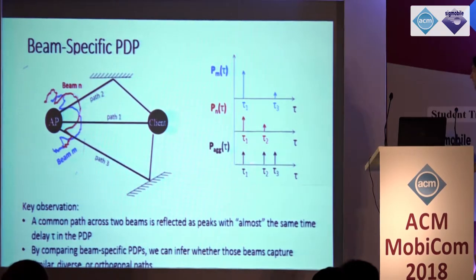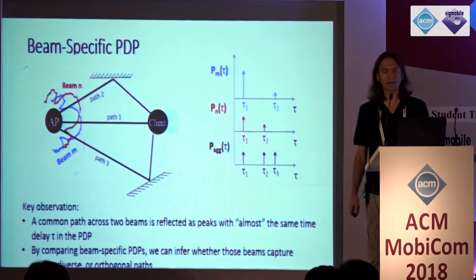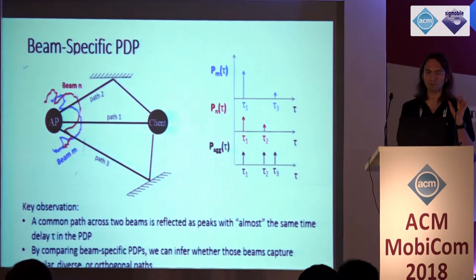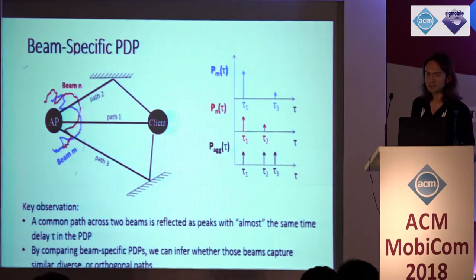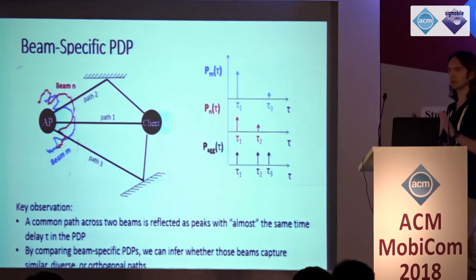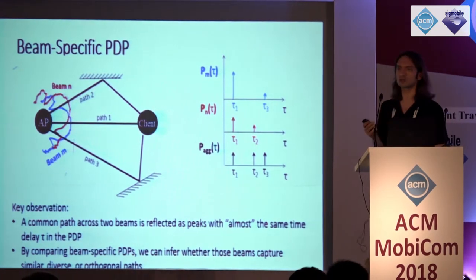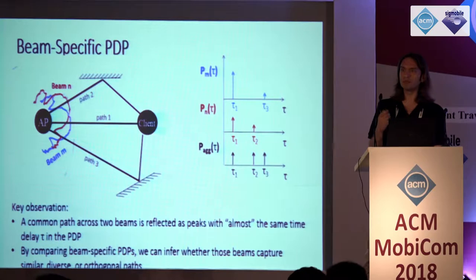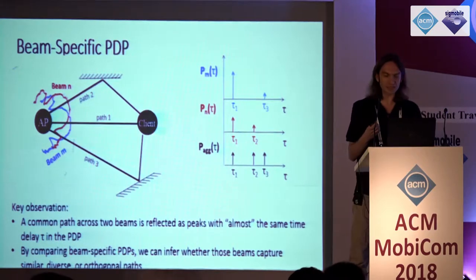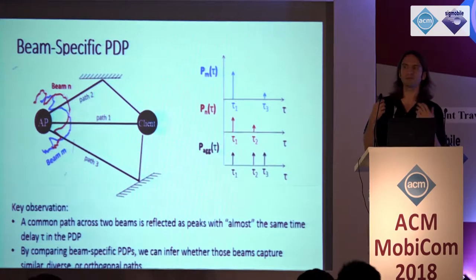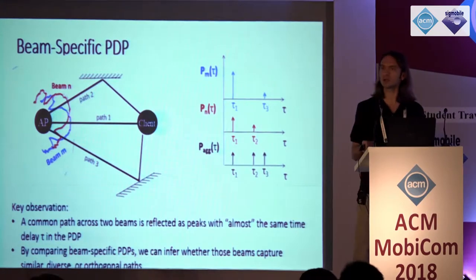I'm also showing the aggregate power delay profile that shows all three paths. A key observation here is that a common path across two beams is reflected as peaks in the beam-specific BDPs that have almost the same delay. By comparing beam-specific BDPs, we can infer whether those two beams capture similar, diverse, or orthogonal paths.